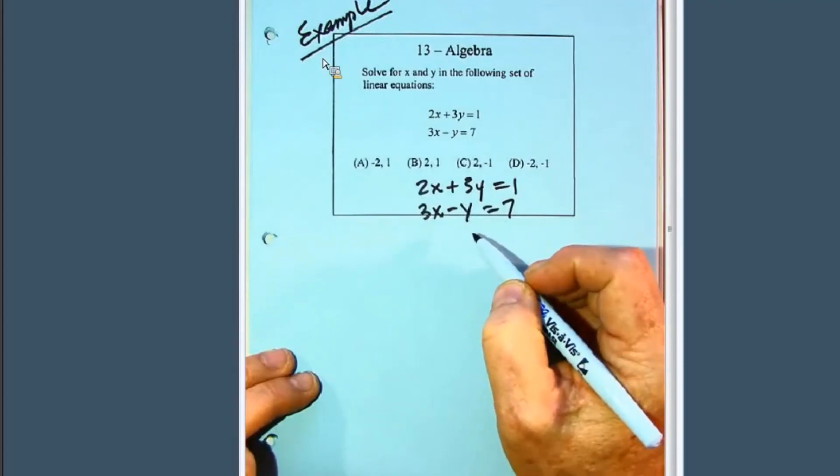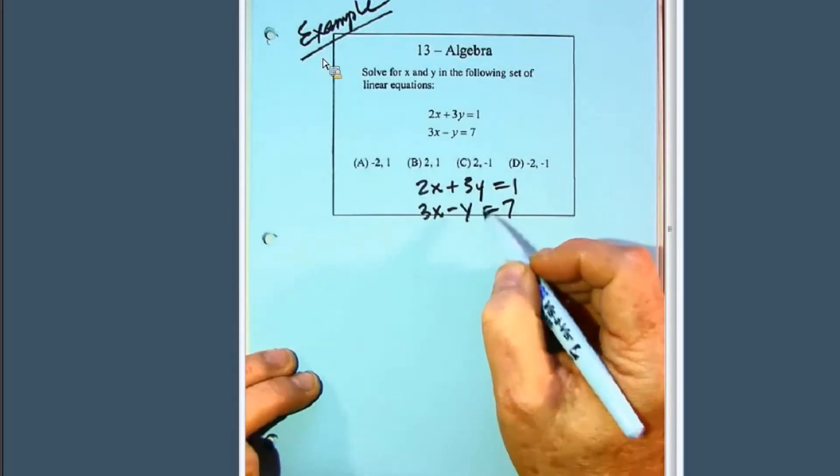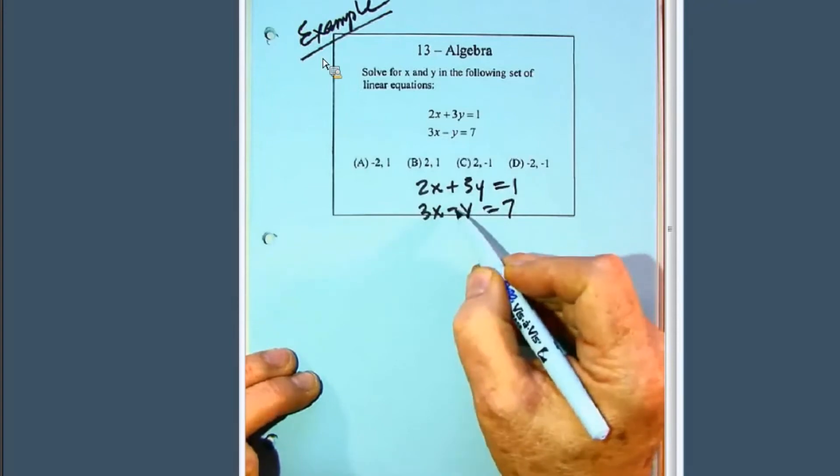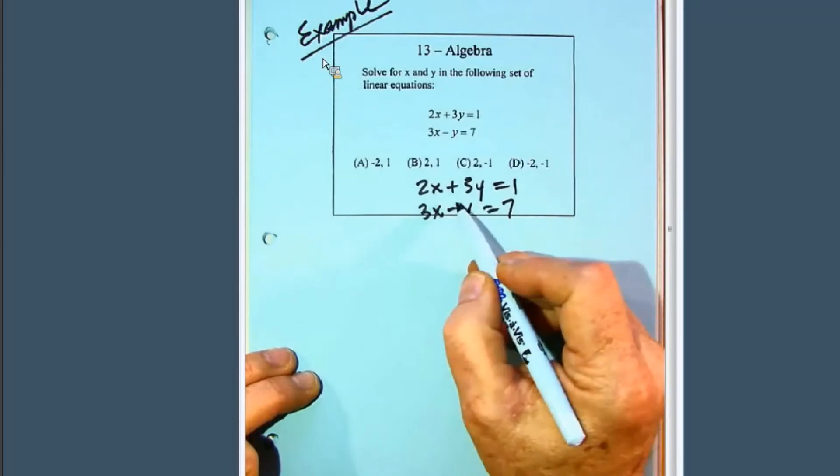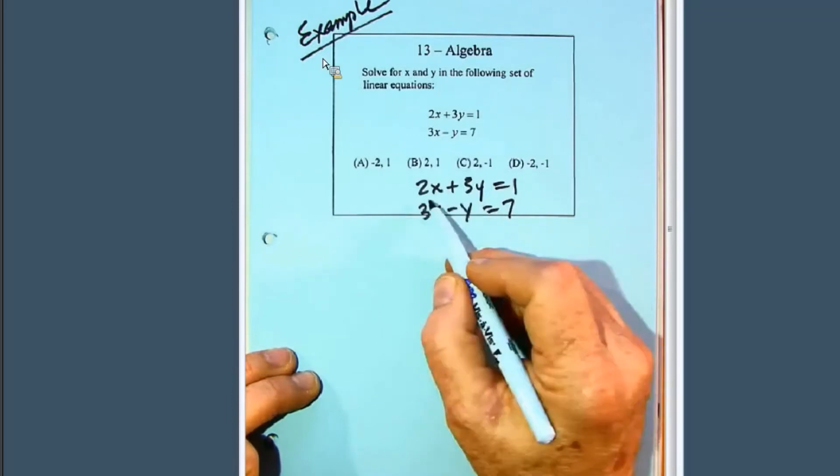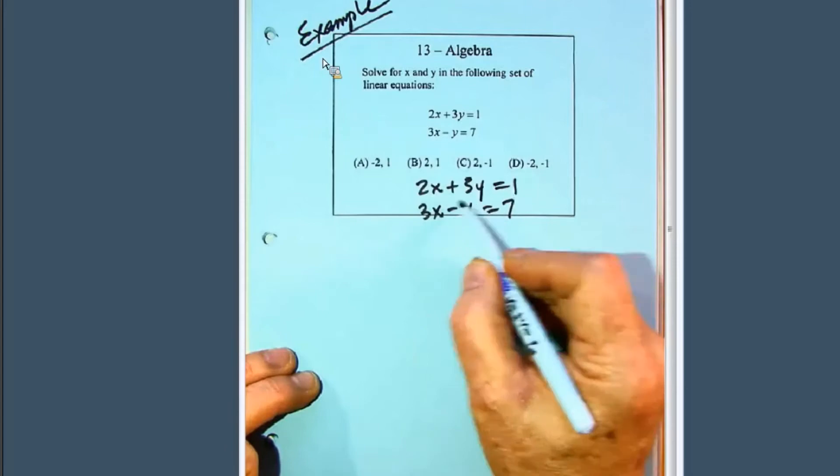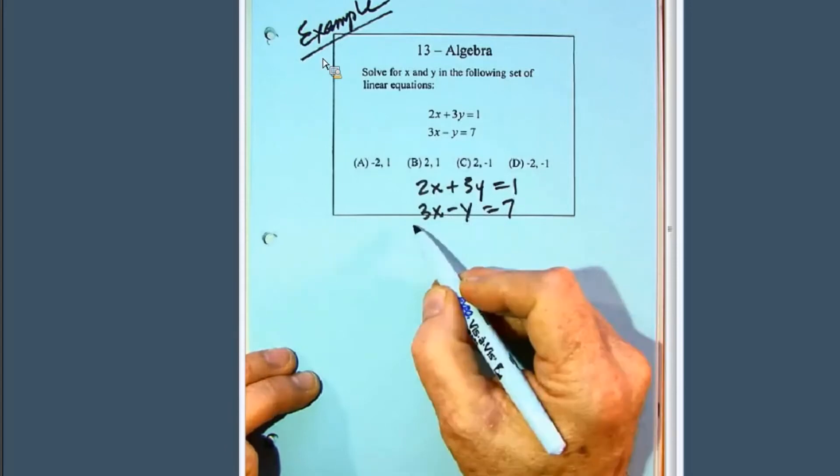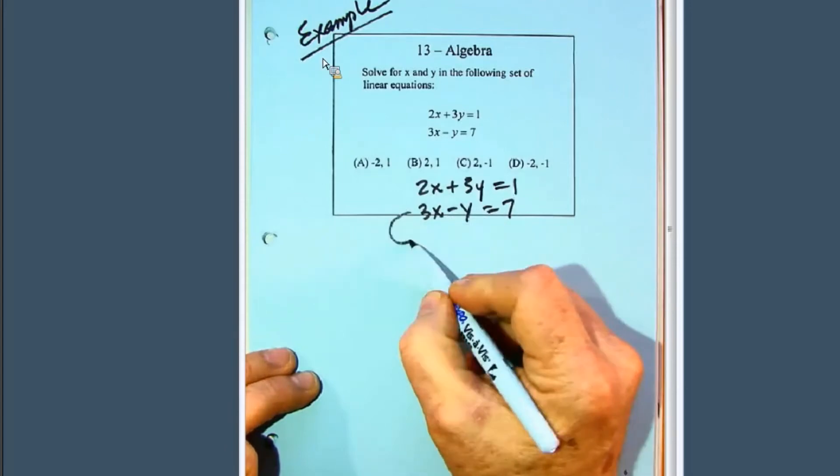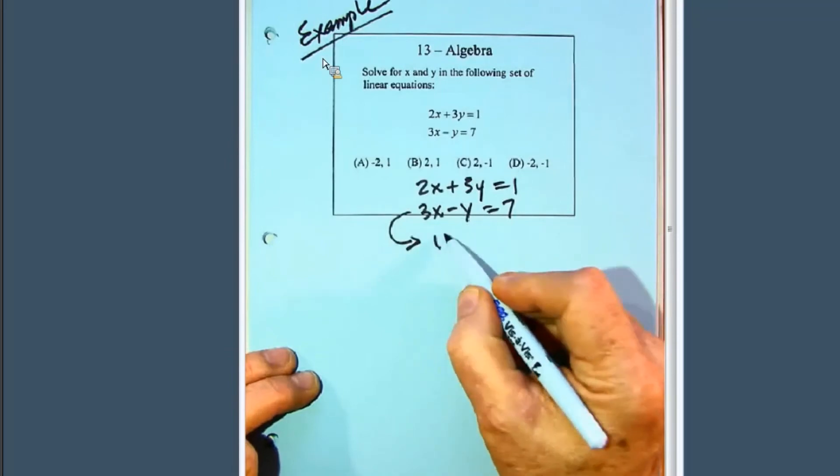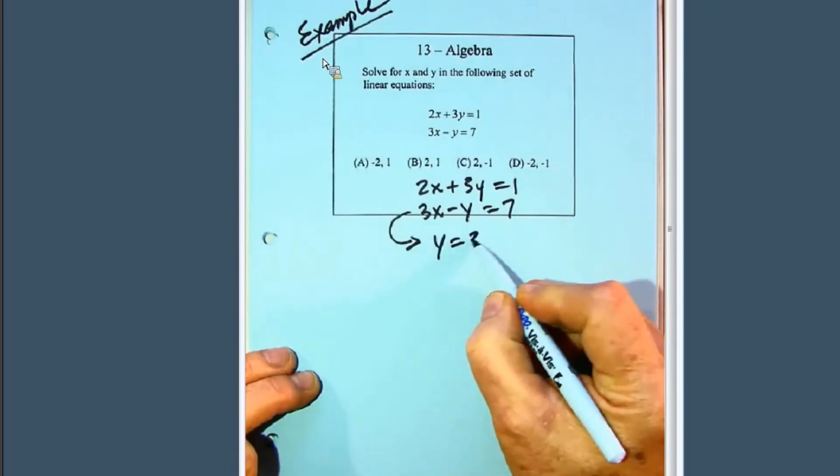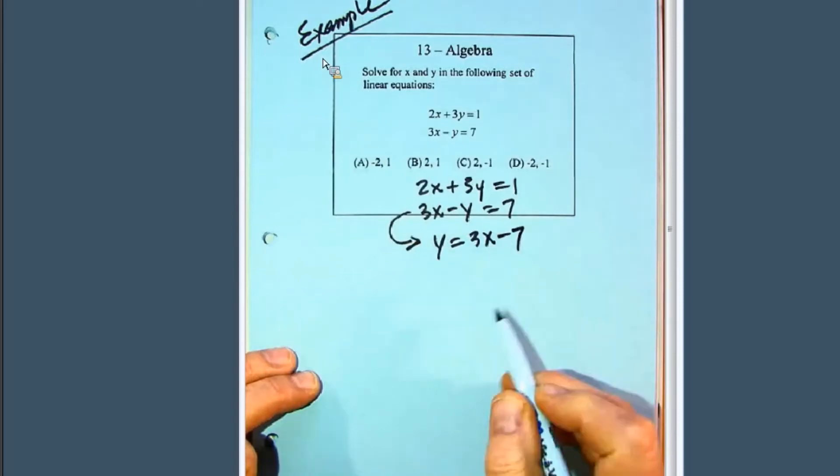It really doesn't matter which one that you do first. The only thing is, it's nice to have one that you don't have to divide through by some integer to get a single x or y. Well, right here, we've got a y. So what we can do is take and solve for y here, and if we do that, y comes out to be equal to 3x minus 7.